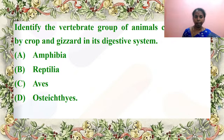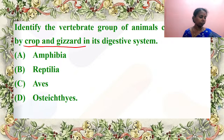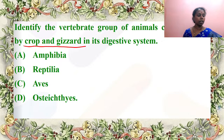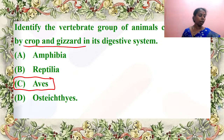Identify the vertebrate group characterized by crop and gizzard in its digestive system — a previous year NEET question. Aves only have crop and gizzard. Crop is for storing and gizzard is for grinding purpose — they have the muscular arrangement to grind. Answer is C — Aves. 100% correct answer by all.